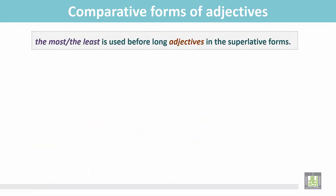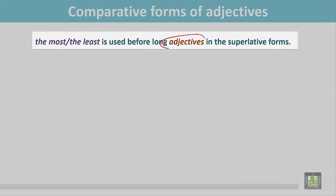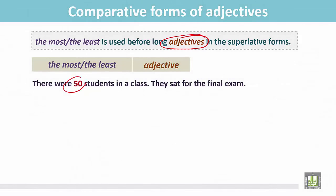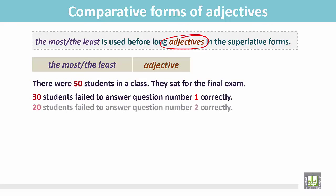The most, the least, is used before adjectives in the superlative forms. There were 50 students in a class. They sat for the final exam. And in this situation, 30 students failed to answer question number 1 correctly, 20 students failed to answer question number 2 correctly, 10 students failed to answer question number 3 correctly.